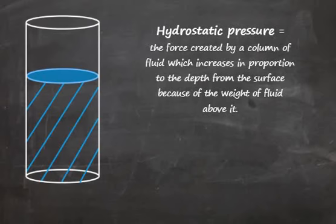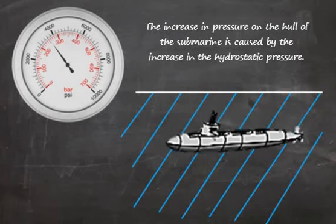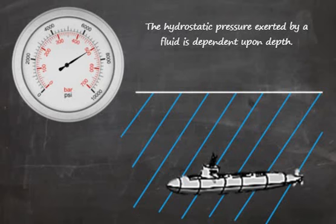Hydrostatic pressure is the force created by a column of fluid which increases in proportion to the depth from the surface because of the weight of fluid above it. As shown in the diagram, the increase in pressure on the hull of the submarine is caused by the increase in hydrostatic pressure. Therefore, the hydrostatic pressure exerted by a fluid is dependent upon depth.